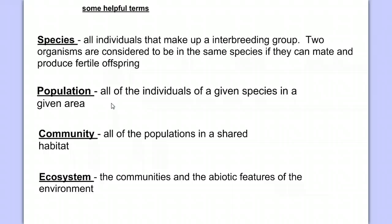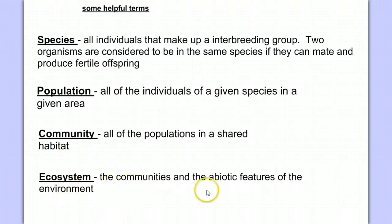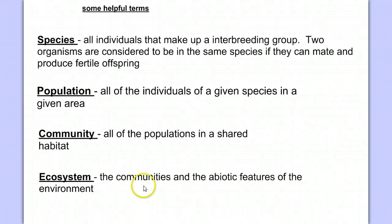All the white-tailed deer in a forest area would be a population of white-tailed deer. Communities are made up of all the populations in a shared habitat. So in one forest, there might be many populations — populations of trees, deer, rabbits, and grasshoppers that all make up the community in that habitat. And the ecosystem is all the communities and the abiotic features of the environment — the living communities plus abiotic features such as the terrain, the temperature, the water, and so forth that make up the whole system.